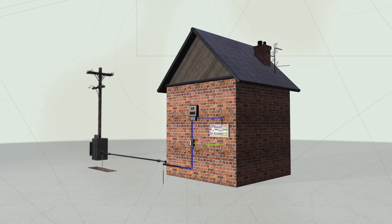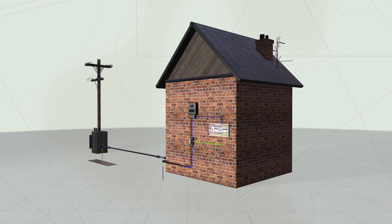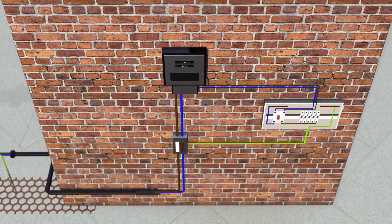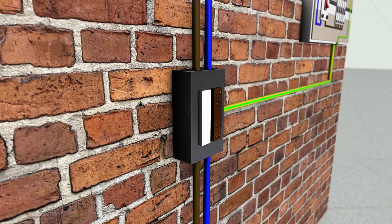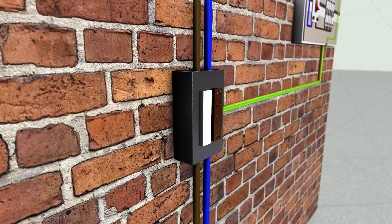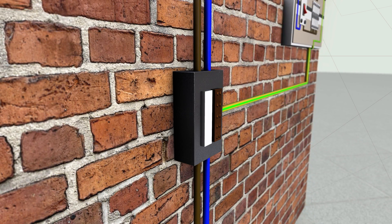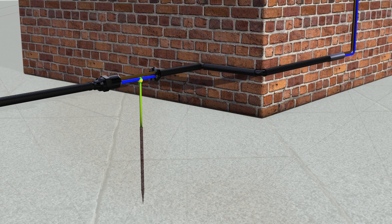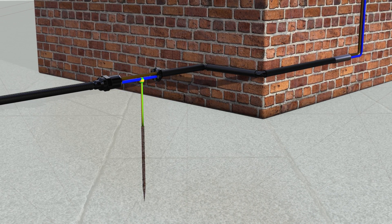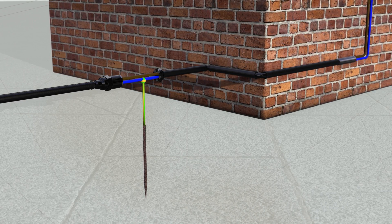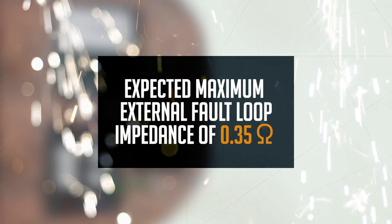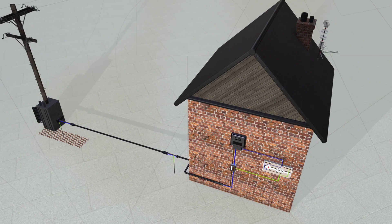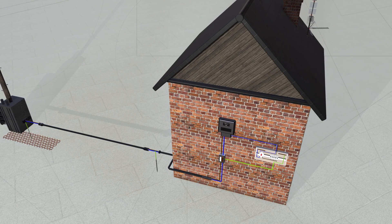In a TNCS arrangement, the earth and neutral are combined in the same conductor from the distribution transformer up to the consumer's installation. As the supply neutral is also used as the earth conductor, it is called a PEN conductor — protective earth and neutral. Once the electrical supply is terminated into the service head, the PEN conductor is split into two terminals: one neutral and one earth. This is the most common earthing arrangement in the UK, also called PME — protective multiple earth — because it could have more than one source of earth electrode along the length of the buried supply cable in the street. The DNO will declare an expected maximum external earth fault loop impedance of 0.35 ohms. This system may be identified by looking at the DNO service head — if the earth conductor comes from inside the service head, it is likely to be PME.